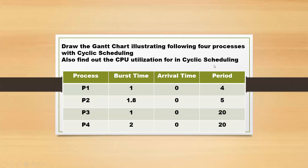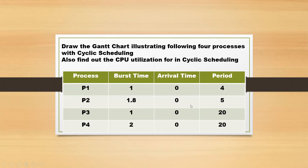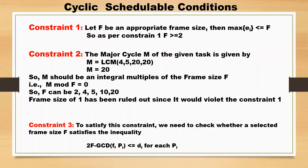We have four processes P1, P2, P3, and P4. The burst times are 1 millisecond, 1.8 millisecond, 1 millisecond, and 2 millisecond. Arrival times of all jobs are at 0. The period of P1 is 4 millisecond, period of P2 is 5 millisecond, period of P3 is 20 millisecond, and period of P4 is 20 millisecond.